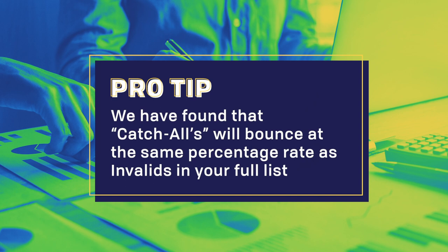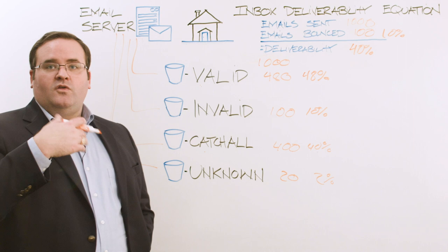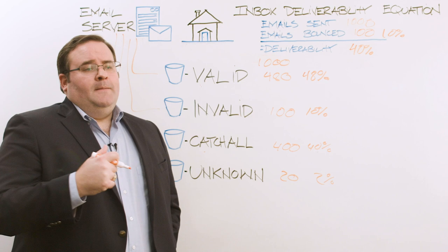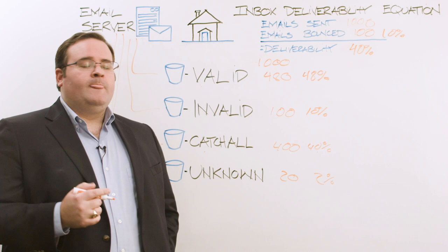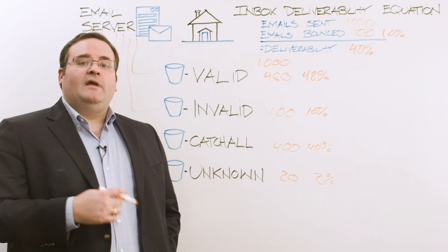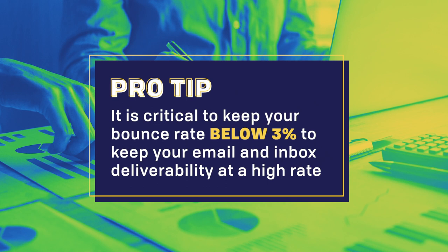So we're saying that 10% of those 400 catch-all addresses will bounce when you send to them. That's important to know because you can develop a small equation to determine how many you can send to while keeping a bounce rate in a high deliverability zone. As a good rule of thumb, most email service providers won't allow campaigns with a 6% to 8% bounce rate. Best practice is to keep your bounce rate below 3%. We actually guarantee that no more than 3% of your list will bounce after using our service, or we'll refund the difference.